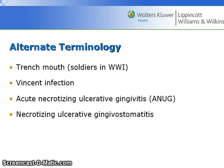Alternate terminology: necrotizing ulcerative gingivitis has also been known as trench mouth, because it occurred in soldiers during World War I where most of the action happened in trenches. It was also known as Vincent infection or Vincent's angina, named after the French doctor who identified it. It was also known as acute necrotizing ulcerative gingivitis, or ANUG, and necrotizing ulcerative gingivostomatitis.